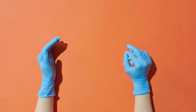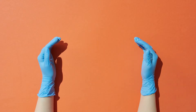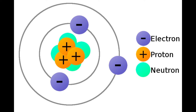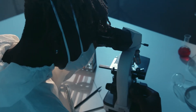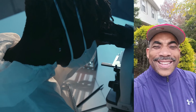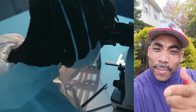Electrons have a negative charge. Protons have a positive charge. Neutrons have a neutral charge. Atoms make up everything small and large.